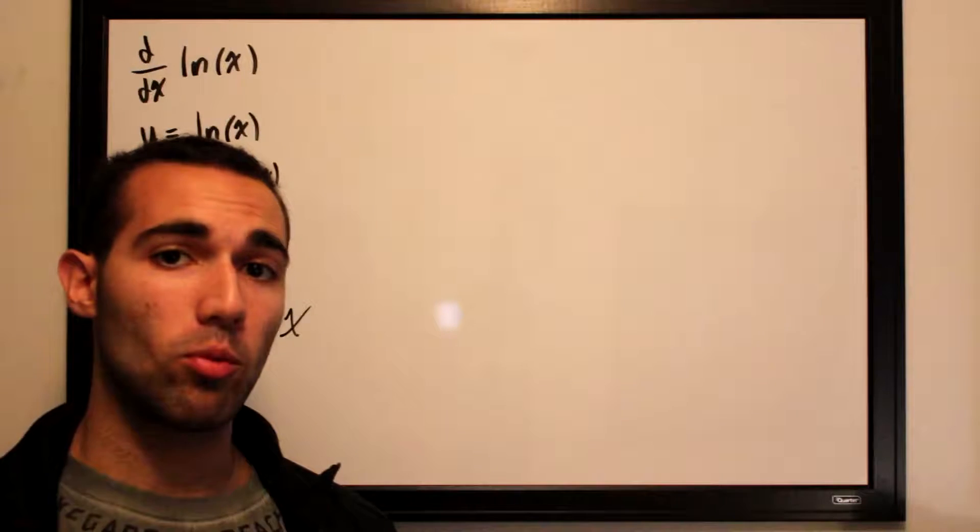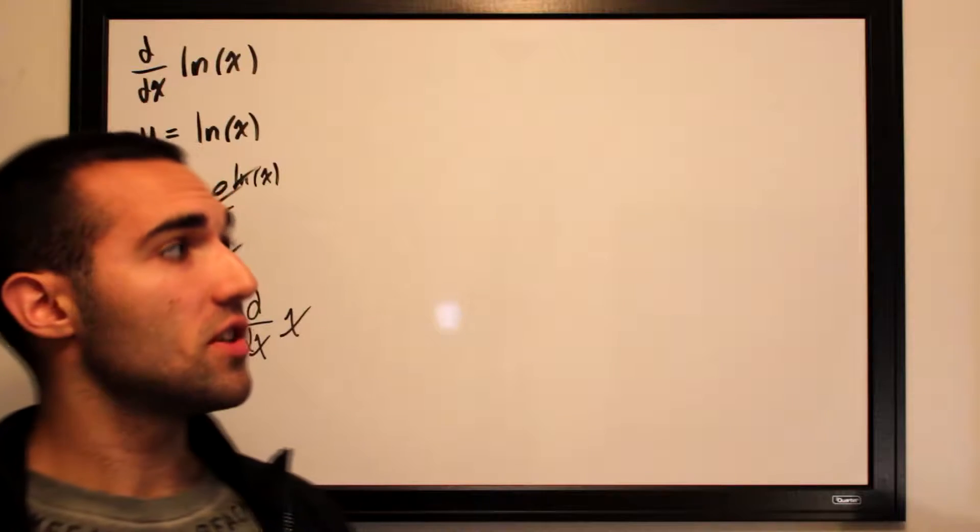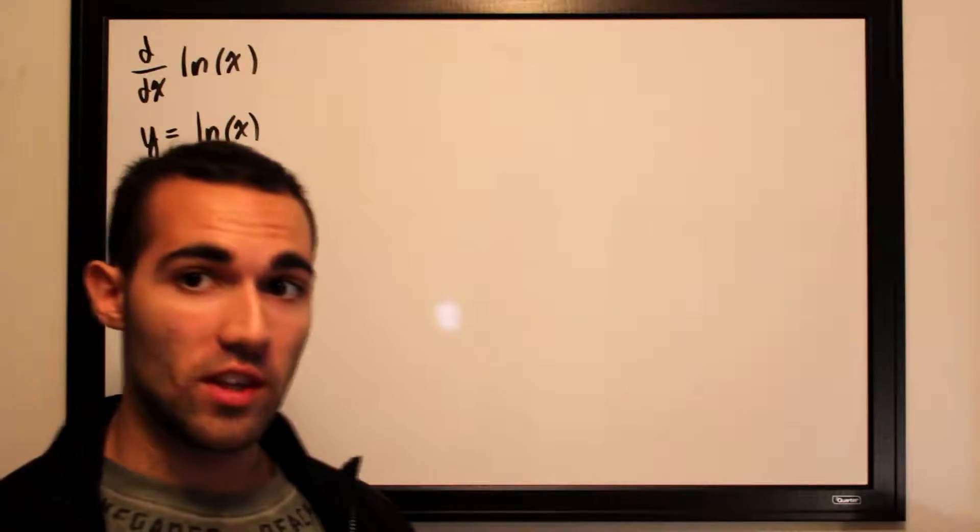So d by dx of e to the y is equal to d by dx of x. And this is essentially a y trapped within an e to the x function. We already know that the derivative of e to the x is e to the x.